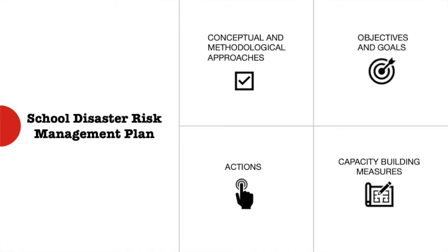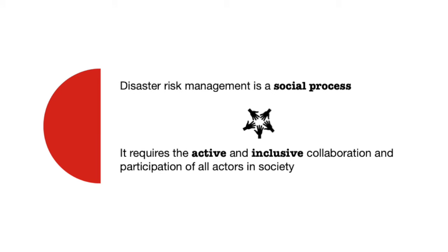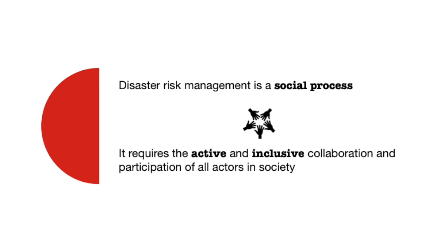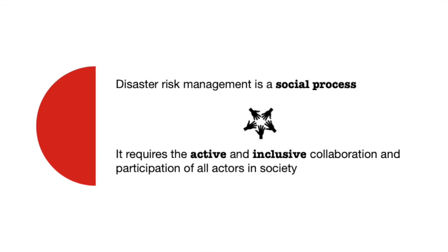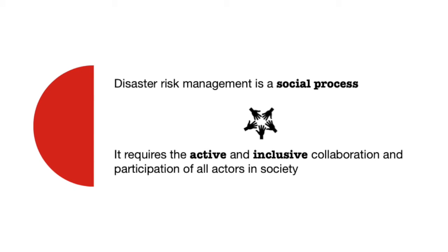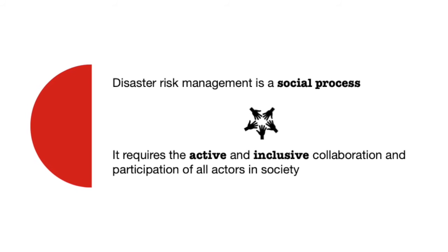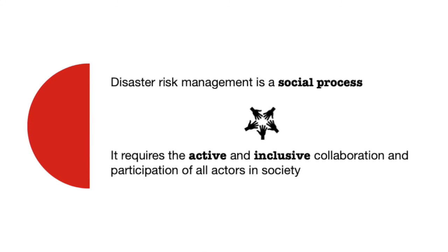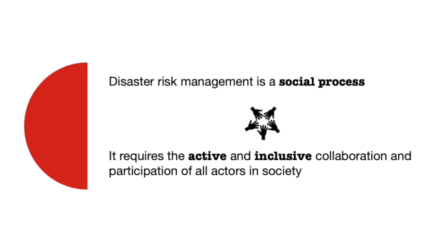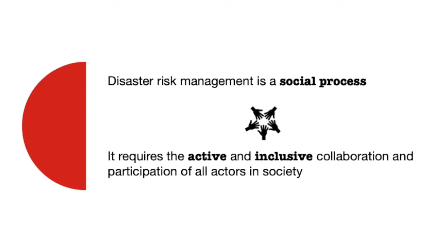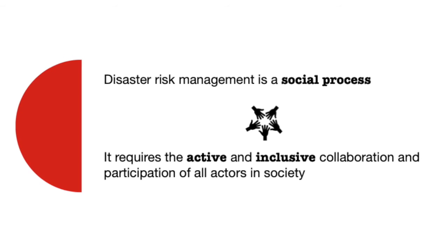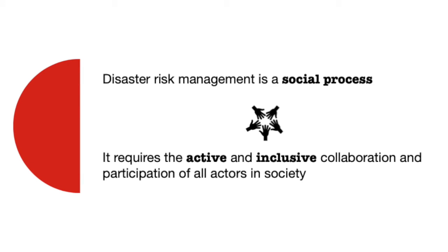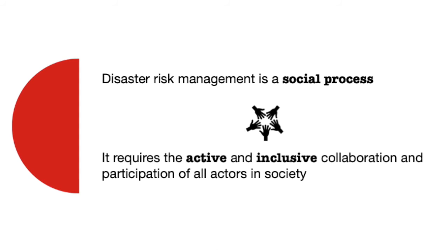Risk reduction and disaster preparedness. Disaster risk management is a social process that requires the active and inclusive collaboration and participation of all actors in society and therefore in the education community. It is important to highlight that schools must meet basic needs and offer the best safety and protection conditions in the face of the multiple hazards to which children and young people may be exposed. This is where the elaboration of a school disaster risk management plan is incorporated.